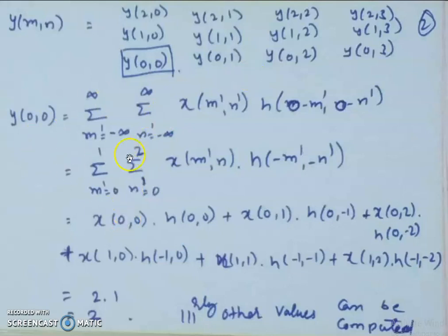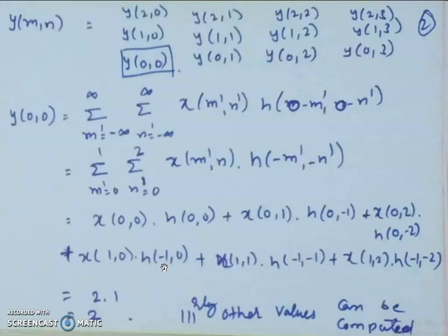After substituting these values, we get 2×1 = 2, and all the remaining terms are equal to zero. All the remaining values of y(m,n) can be computed by substituting the corresponding terms in the expansion.